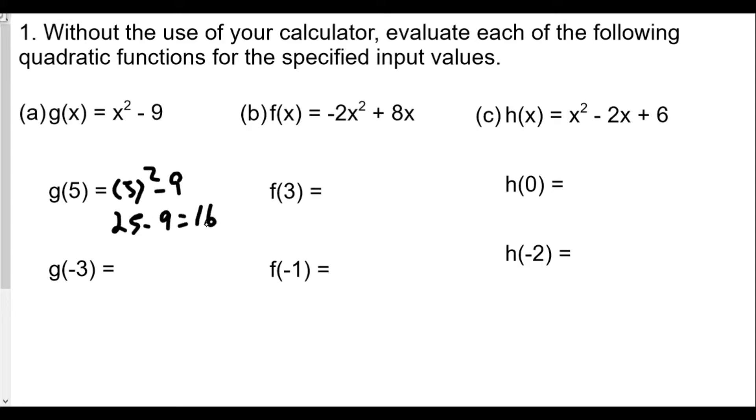For g of negative three, we have negative three squared minus nine. We get nine minus nine equals zero.